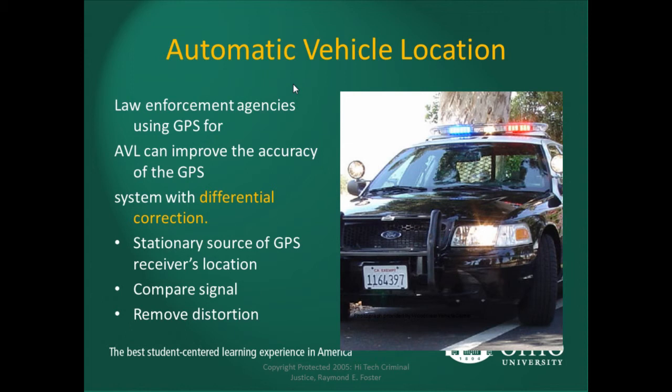AVL — Automatic Vehicle Location — is something now commonly used by most law enforcement agencies. I'll give you an example by pulling up a live map of our agency to show how we use AVL data in our dispatch center. It gives dispatchers a quick-glance view of where an officer is, what they're doing, and some status information as well.